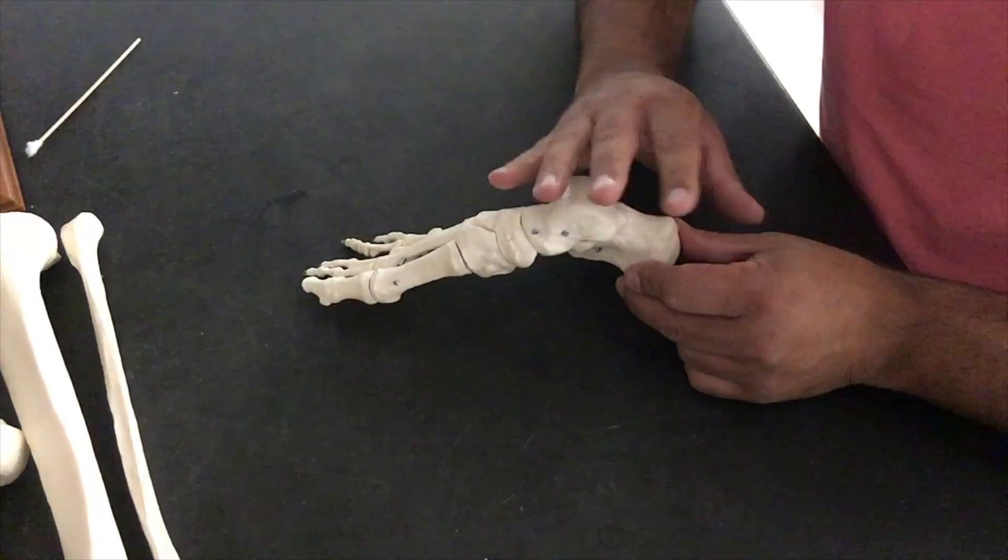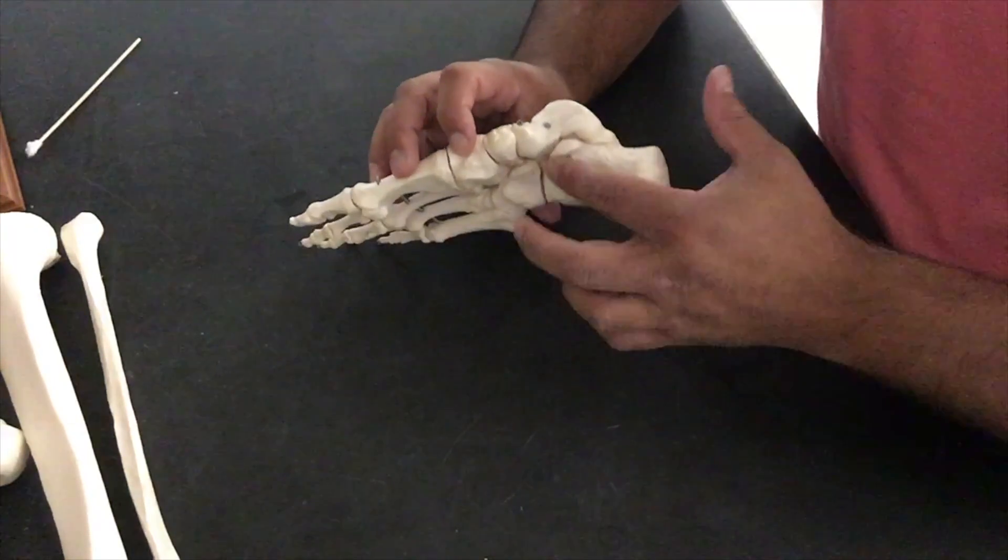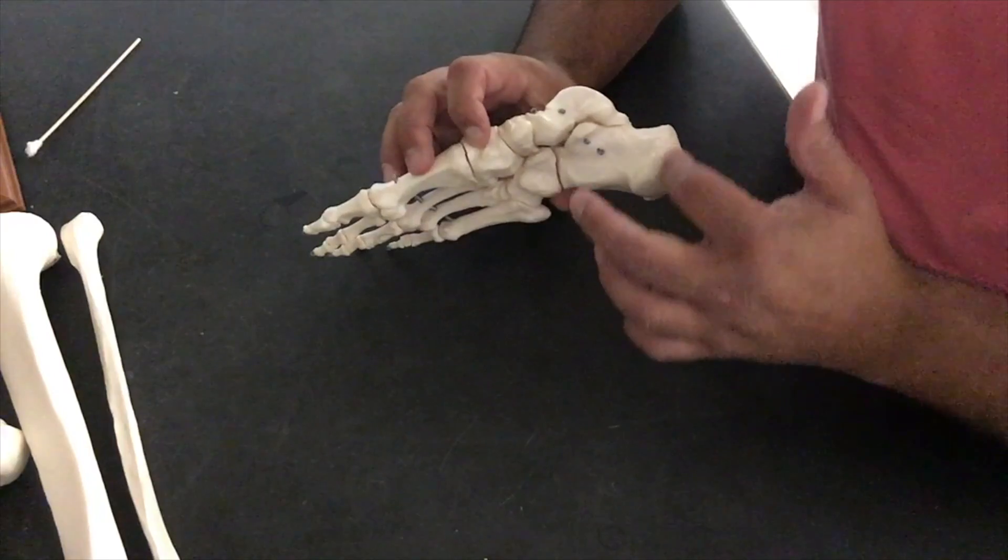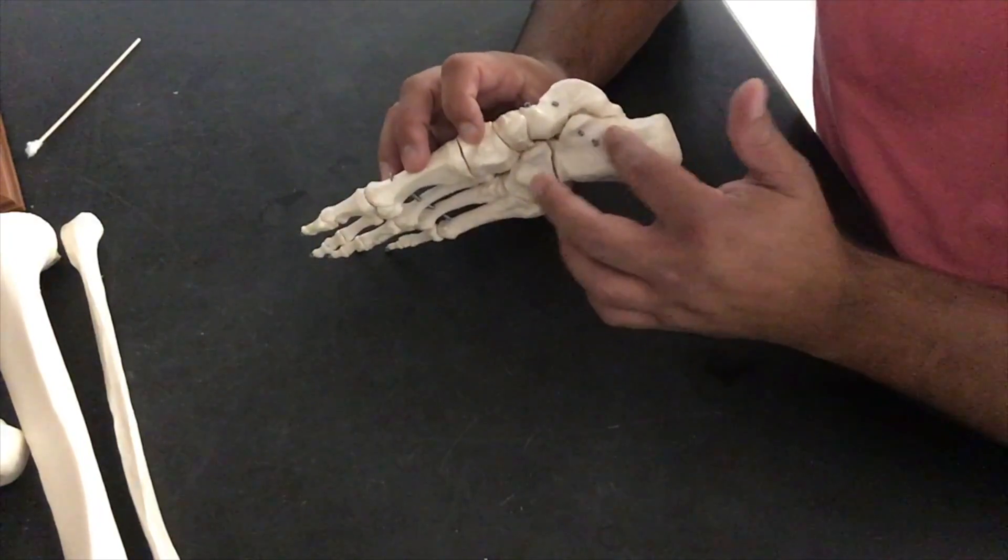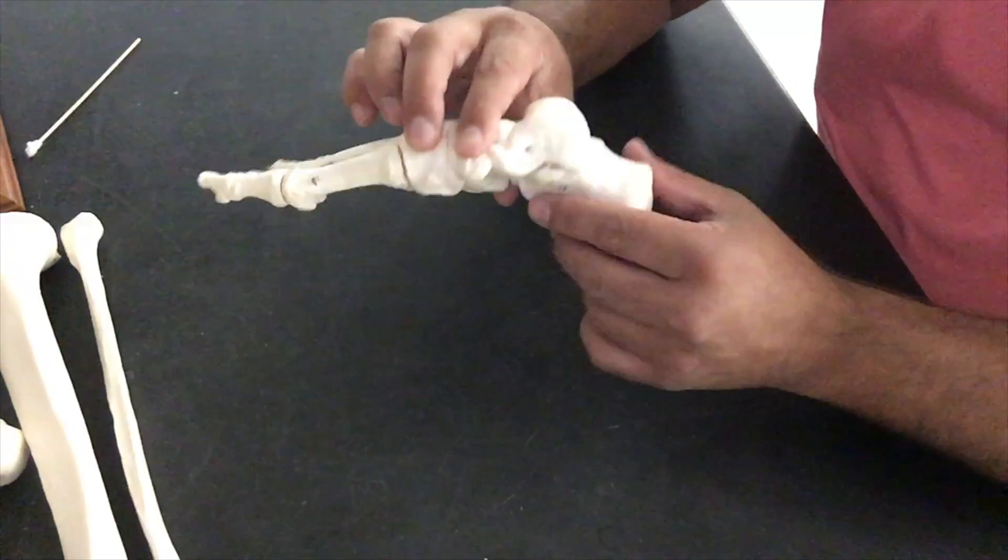We're going to look at our tarsal region, our ankle bone. This is going to be equivalent to our carpals in our wrists. One of the largest bones in our tarsal region is our calcaneus. It's what forms the heel.